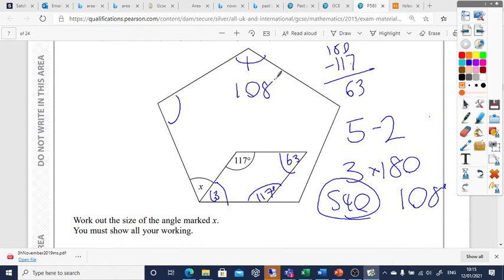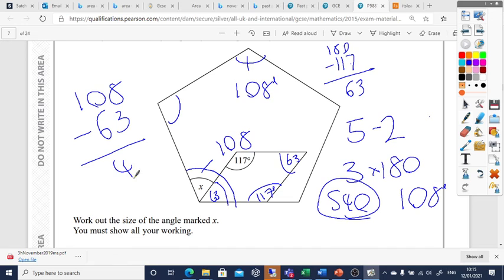So I know that's 108. All of them are 108. So to work that out I'm going to do 108 take away 63 because that's what's left, which leaves me with 45, so that angle there is 45 degrees.